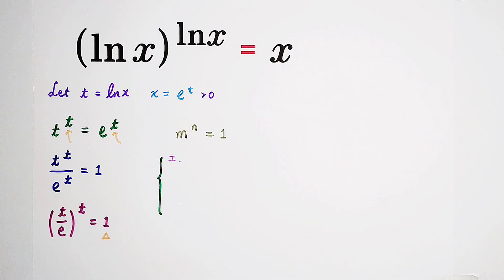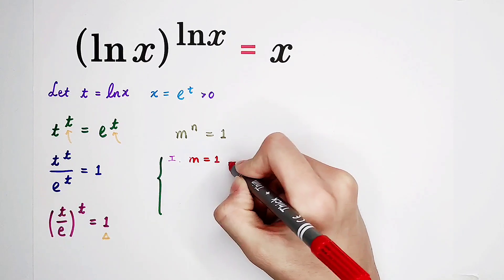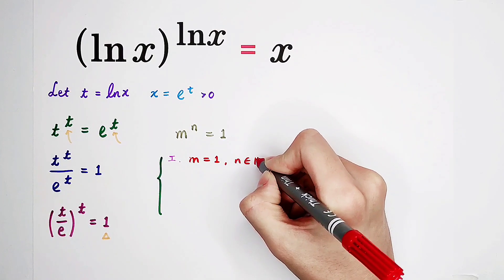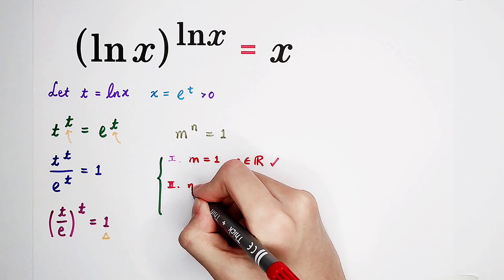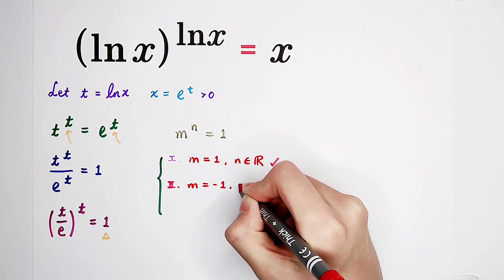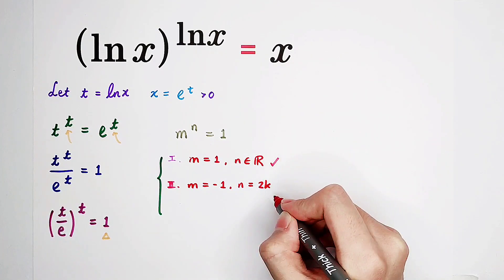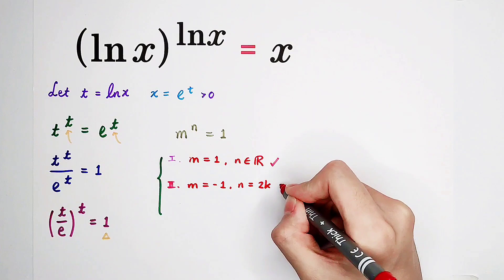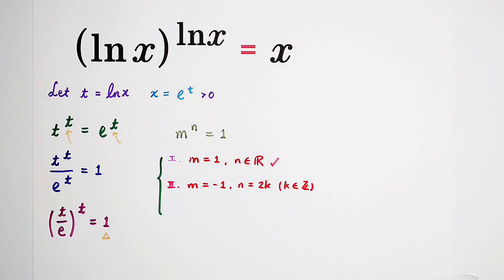The first one: if m is 1 and n is any real number, then there will be solutions. Second case: if m is negative 1, now n should be an even number, written as 2k, where k is an integer. Then, in this case, there are also solutions.